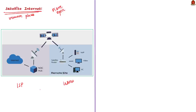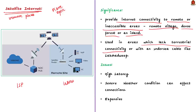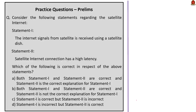In India, satellite internet is mostly used in areas lacking terrestrial connectivity, such as Lakshadweep. Issues with satellite internet include high latency — the time taken for data to be transmitted and received — due to the complex continuous process of signals being transmitted between the satellite and receiver dish. Additionally, severe weather conditions can sometimes affect satellite internet, and it is more expensive compared to traditional internet connectivity.